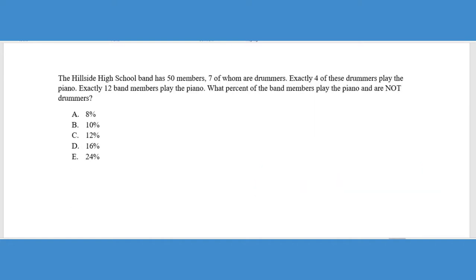Okay. This last question, we have some very important terms in here and you got to pay attention to what the question is asking us. So we need to kind of break this down. Now, the math on this particular problem is not difficult, but we need to make sure we're setting it up correctly. It says the Hillside High School Band has 50 members, seven of whom are drummers. Exactly four of these drummers played the piano. Exactly 12 band members played the piano.